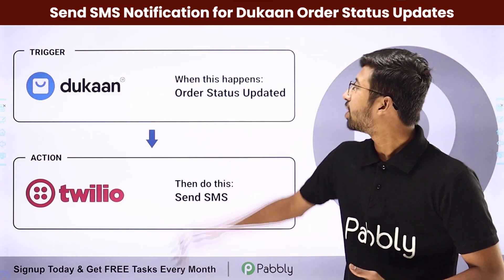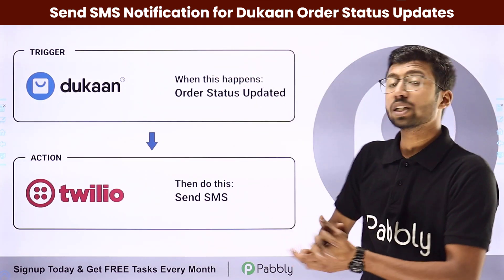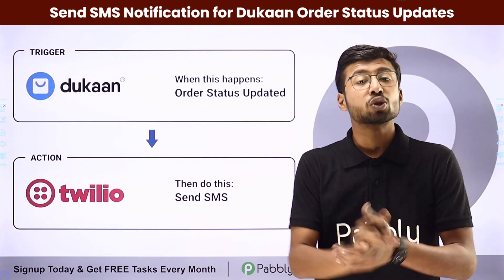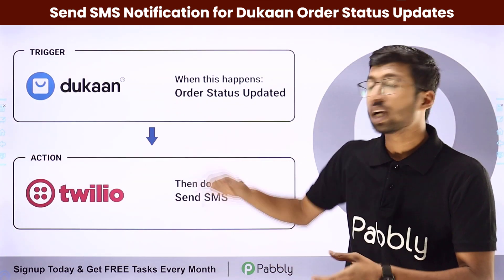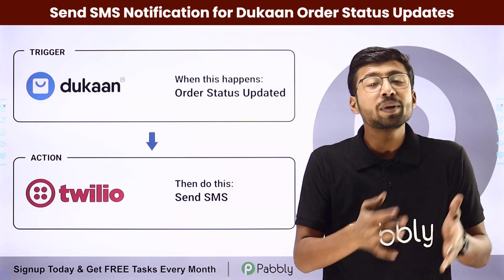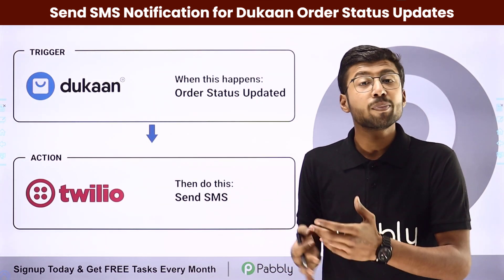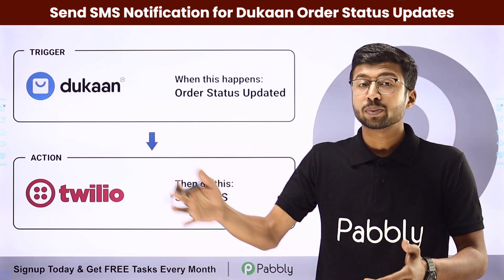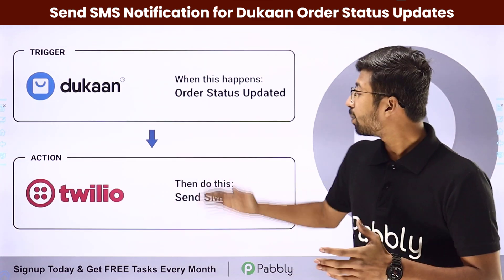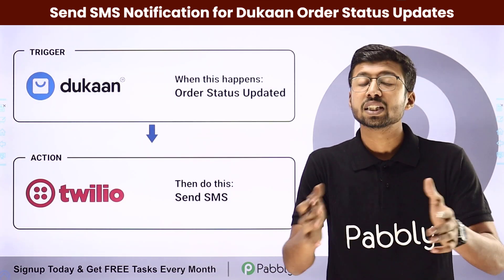In this video, we will learn how to send SMS notifications for Dukan order status updates. Suppose you have created an online store using the Dukan app and you want that whenever you receive an order and update or change the status of that order — for example, if you accept the order, ship it, or the order has been delivered — you want to send an SMS notification to your customer with the status update.